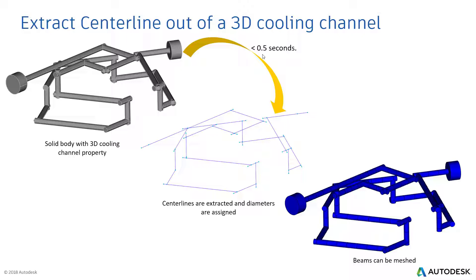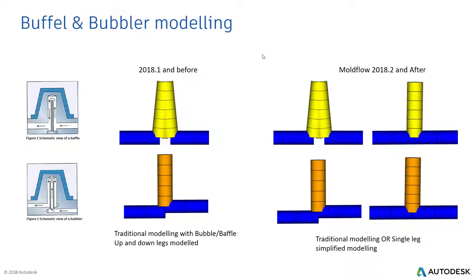Here's how this process works: you import the solid model, assign the properties as a 3D channel, and then with the help of the geometry tool you can extract the cooling line center. As it gets extracted, it also assigns the properties to those channels. You may need to do some modifications if channels are not connected, but this process is quite fast - in less than a minute you get those centerlines.